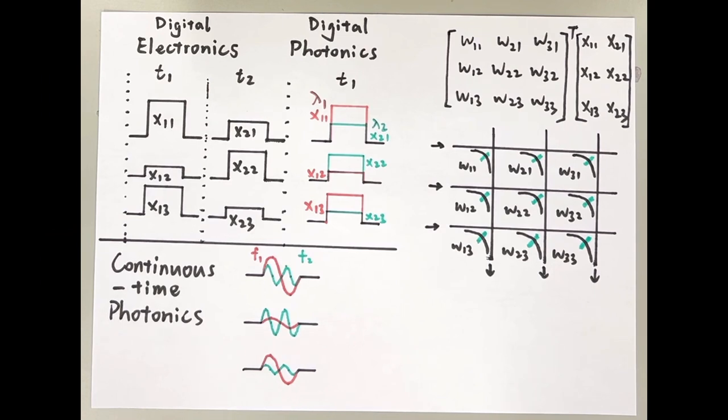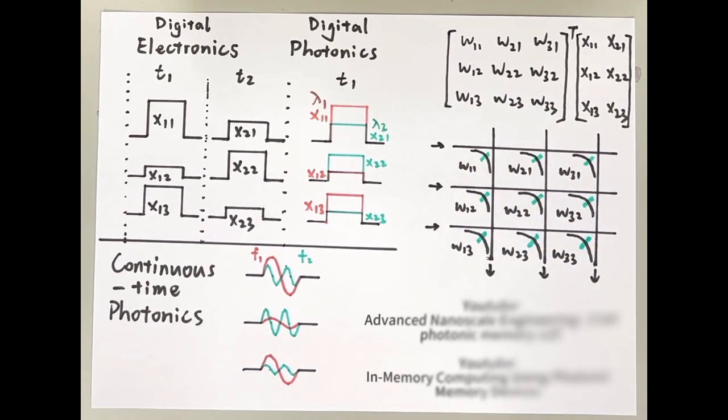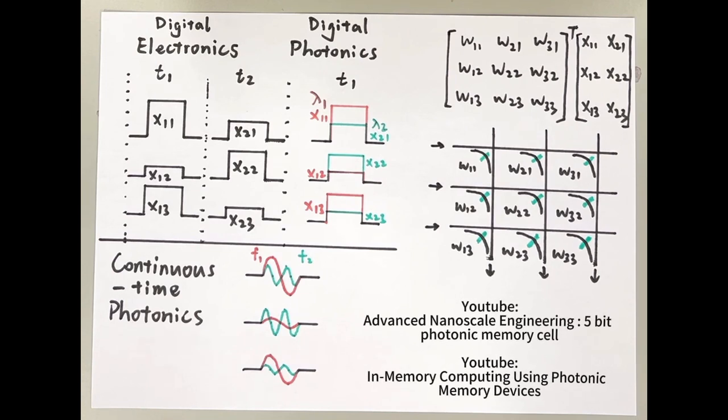The weights are encoded in the photonic memories in each unit cell. For more information on how the photonic memory works and how a direct multiplication is realized, please refer to our previous videos.